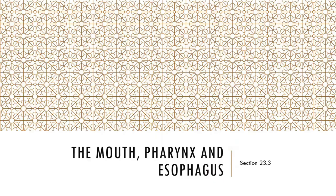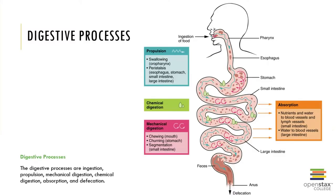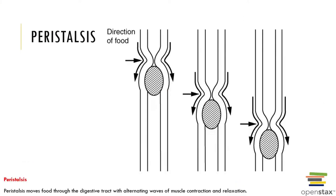There is a main hormone which we call gastrin. Gastrin is secreted by the stomach in response to the presence of food, and this gastrin is going to stimulate secretions of what we call gastric acid.